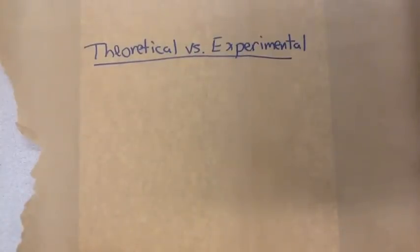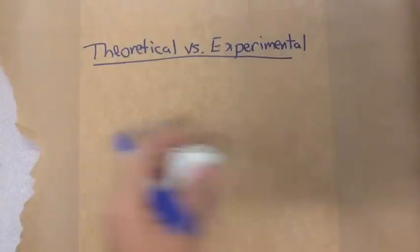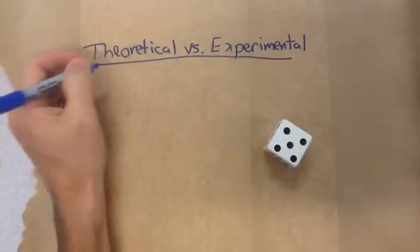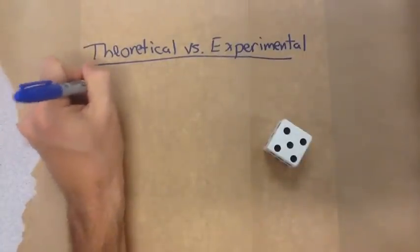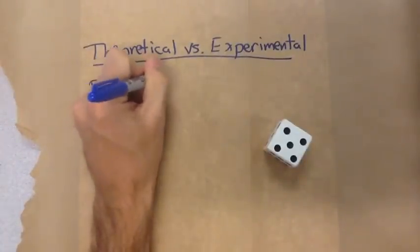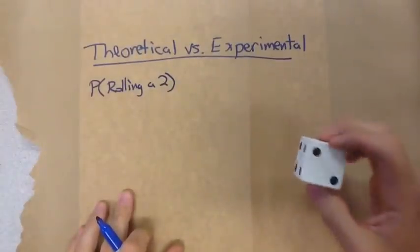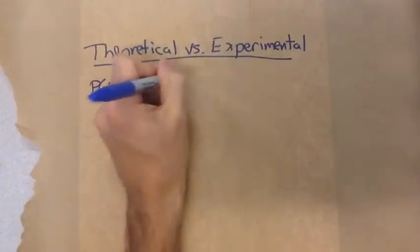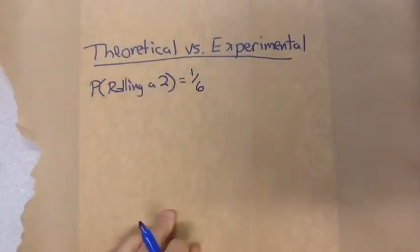Let's start with just rolling a six-sided die. I could sit and roll a die, and let's say I want to look at the probability of rolling a two. There are six different outcomes, so the probability should be one in six.